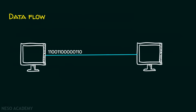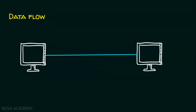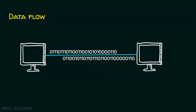Now this computer is sending data in only one direction, so this is simplex. If both sending and receiving can happen but not at the same time — now sending is happening, now receiving is happening, but not at the same time — this comes under half duplex. In full duplex mode of communication, both sending and receiving can happen at the same time simultaneously, and we call that full duplex.